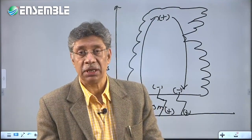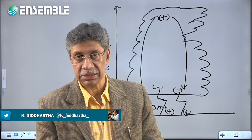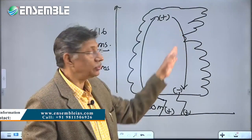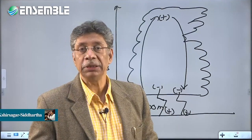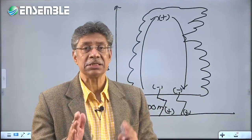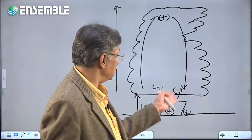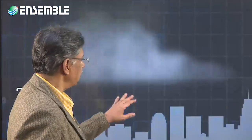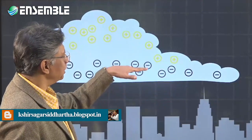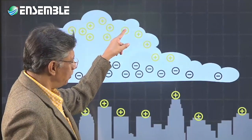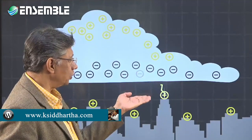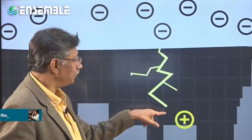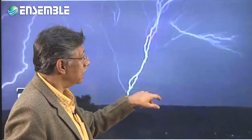When a thunderstorm cell reaches its mature stage — becoming bigger and bigger — the electric resistance of the air breaks down and lightning occurs by neutralizing the electric charges. The small positively charged ions move upward, and in response the negatively charged ions settle at the base, while the ground becomes positively charged. That is how the charge and electricity are conducted between the cloud base and the ground.